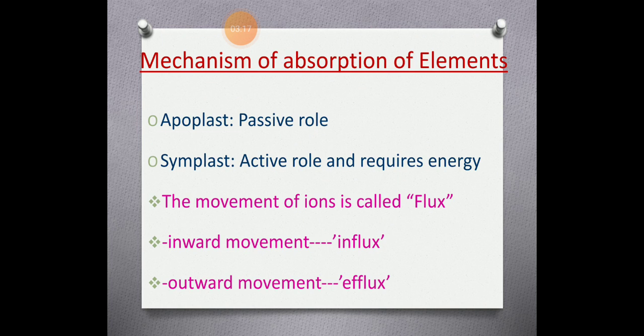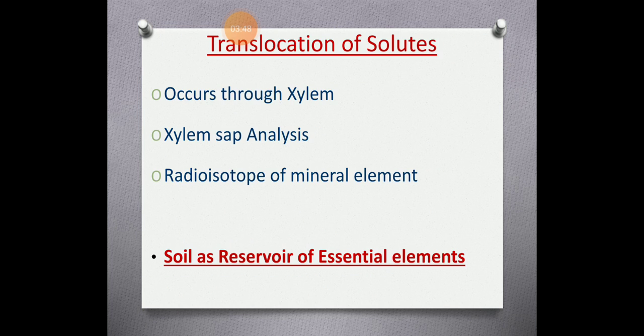The mechanism involved in absorption of these elements includes the apoplastic mode, which is a passive role that helps minerals to be absorbed into the plant. The symplastic mechanism requires energy through active transport. The inward movement of nutrients is called influx and the outward movement is called efflux. Together, this movement of ions in the plant is referred to as flux.